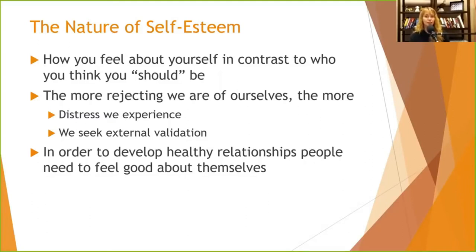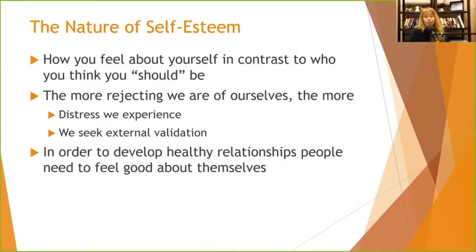In order to develop healthy relationships, we have to know what's important to us. When we make that list of who we should be, we're identifying characteristics that are important to us — and we can use that as a barometer for identifying what kinds of people we want to surround ourselves with. We want to be best friends with people beyond just those who tell us we're okay.